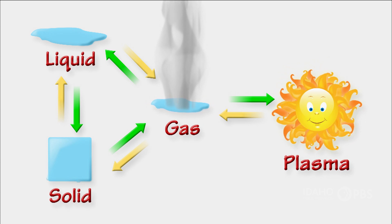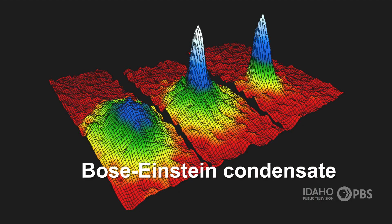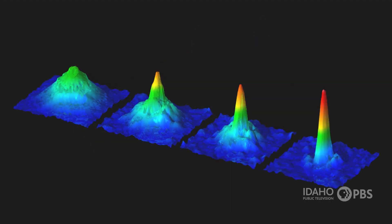There are other forms of matter — for example, one called Bose-Einstein condensates — but these exotic forms of matter exist only in laboratories and aren't found naturally on Earth. So let's first talk about solids.